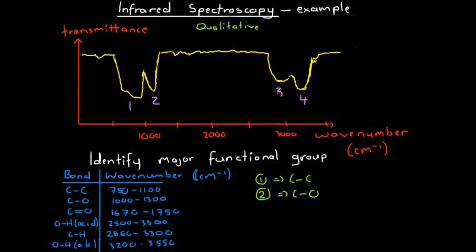Trough number three is a little more ambiguous. It occurs at a wave number of about 2700–2800 and goes up to just over 3000. This could have been caused by an O-H bond in an acid — an acidic oxygen-hydrogen bond — or a carbon-hydrogen bond. Here is where we have to use our skills of deduction.